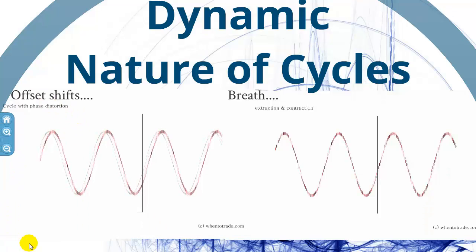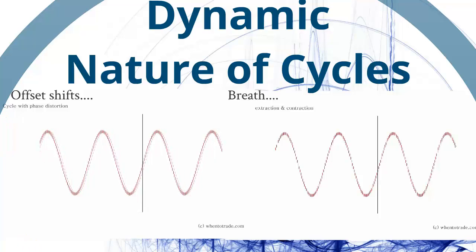The first effect I want to show you is the so-called offset shifts. This means we have cycles with phase distortion, and you see by the red moving cycle, it's still the same cycle as the gray one but it's moving a little bit around the tops and the lows.